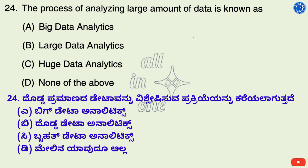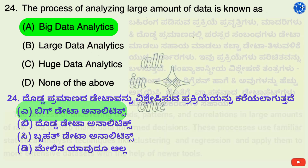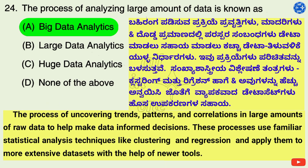Question 24. The process of analyzing large amounts of data is known as — Options: A. Big data analytics, B. Large data analytics, C. Huge data analytics, D. None of the above. Right answer is A: Big data analytics. The process of uncovering trends, patterns, and correlations in large amounts of raw data to help make data-informed decisions, using statistical analysis techniques like clustering and regression applied to extensive datasets with the help of newer tools.